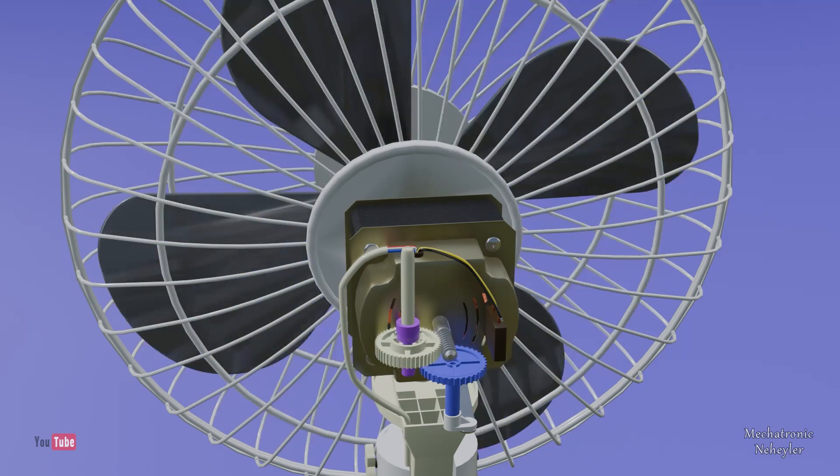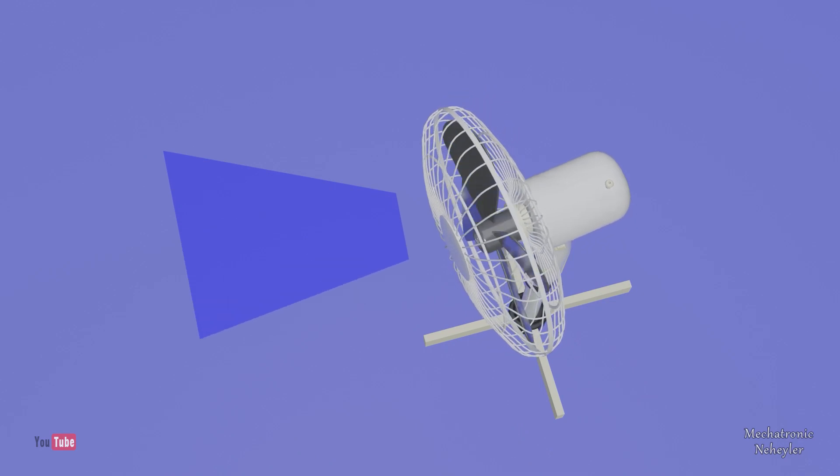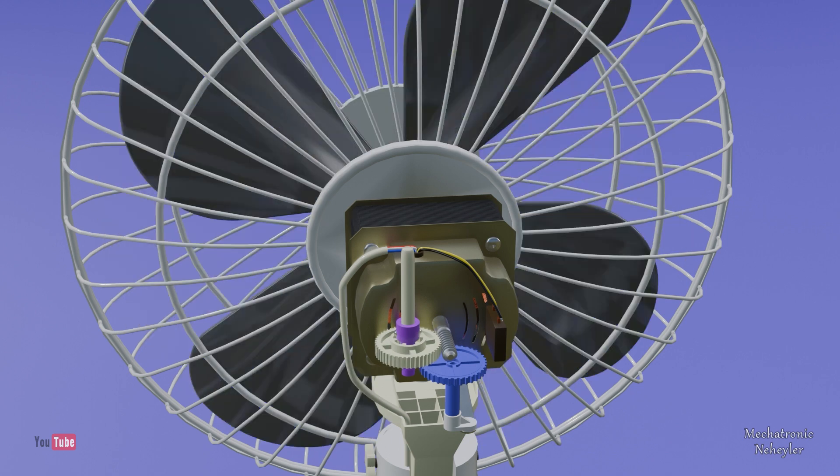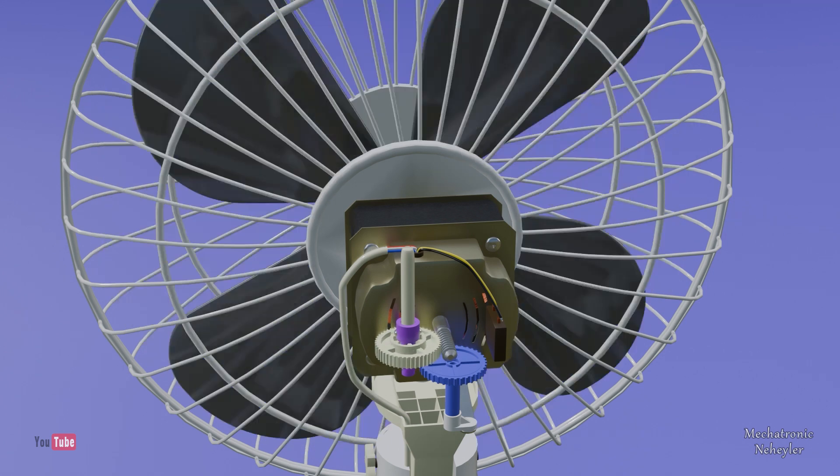And the question is, how does the oscillating motion direct the airflow over a wider range? Well, the magic happens here behind the fan in the gearbox.